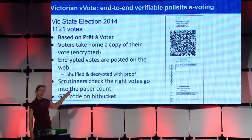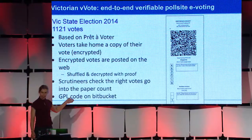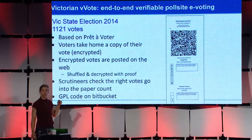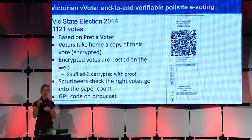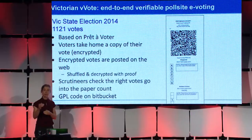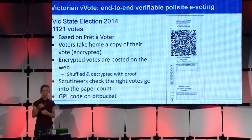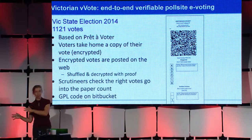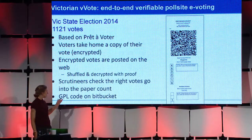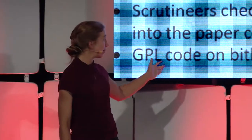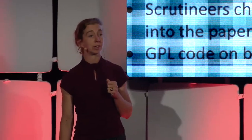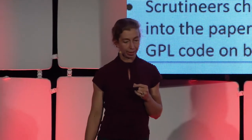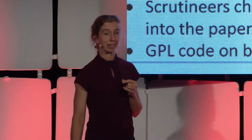Then finally, the scrutineers who are watching the paper count — and remember, this is only a tiny fraction of the total votes in the election — can check the output of this system and check that that output correctly goes into the paper count that they're carefully observing. It's an open source system. GPL code is out on Bitbucket, and there are quite a few academic papers that describe what the protocol is and why we think it has the security properties that it does.